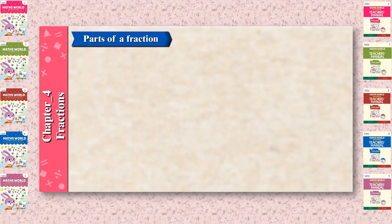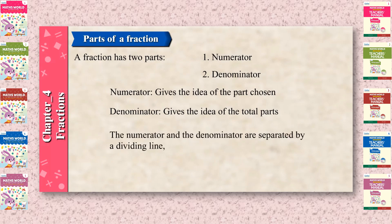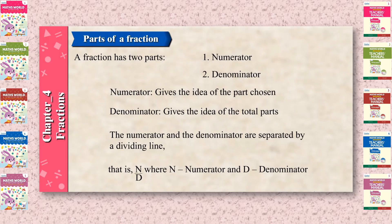Parts of a Fraction. A fraction has two parts: numerator and denominator. The numerator gives the idea of the part chosen. The denominator gives the idea of the total parts. The numerator and the denominator are separated by a dividing line, that is n upon t, where n is the numerator and t is the denominator.